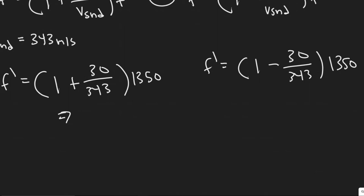So let's go ahead and see what these are. So 330 divided by 343 plus 1 times 1350. So I got 1468.08. Keep in mind this is frequency, so we have hertz here.